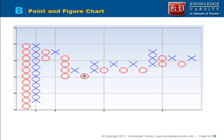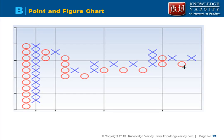The point and figure chart is a good way to identify support and resistance lines. You can observe that the price finds it difficult to go beyond a certain level — it increases repeatedly but cannot break through and comes back. Circles represent decreasing prices and crosses represent increasing prices. Each column contains only one type: if the price decreases then increases by more than three dollars, you move to a new column.